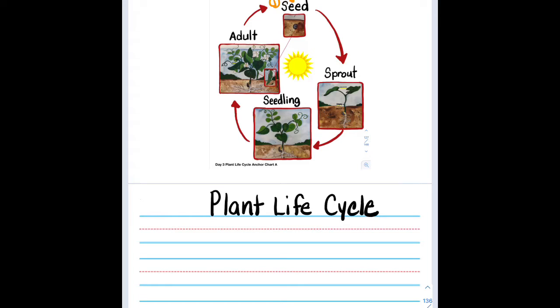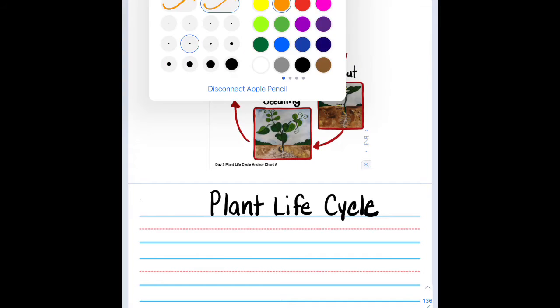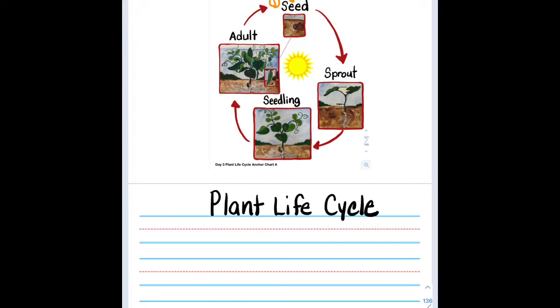The first sentence we need to write is our topic sentence. Our topic sentence tells the reader what they are going to be learning about. So a topic sentence might be something like, plants have a life cycle because we are talking about the plant life cycle, right? So we could make a sentence that says, plants.